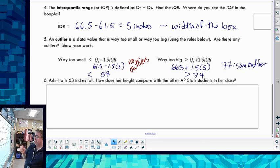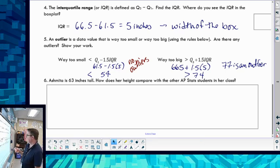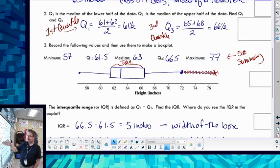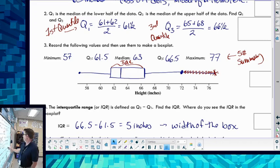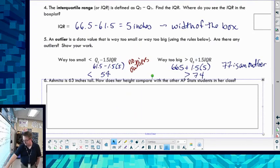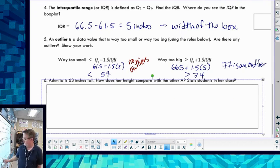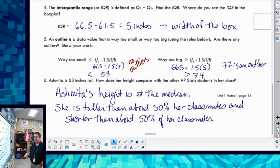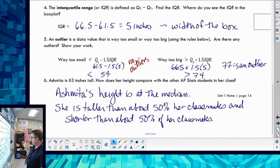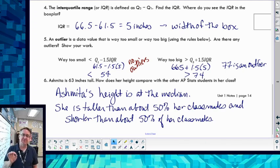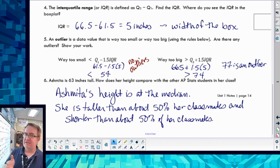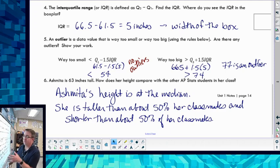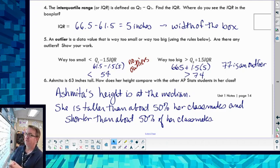So now here, Ashmeeta is 63 inches tall. How does her height compare with the other AP students? Now if I look at where that is, 63 happens to be the center. So you're going to describe what it's like to be at the median. It is as straightforward as saying the following: Ashmeeta's height is at the median, so she is taller than about 50% of her class, and shorter than about 50% of the class. The reason why we're not saying 50% specifically is depending upon how the median is, sometimes it's not exactly. For example, in this case, the median is an actual number. So it's almost 50% is lower, because in this case here we have 10 out of 21 kids are taller than her and shorter than her, so that's why it's about half.